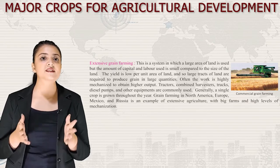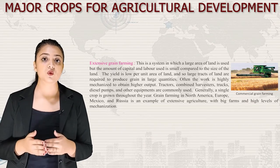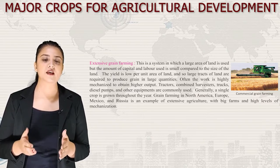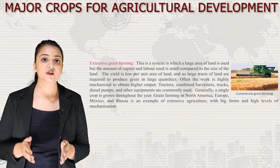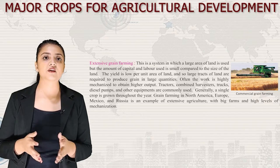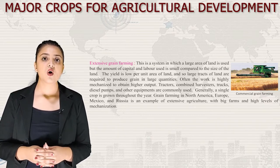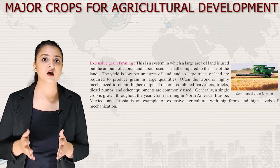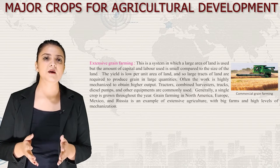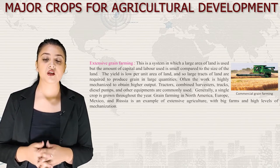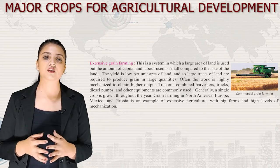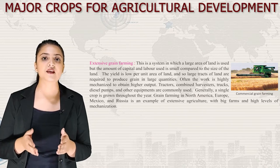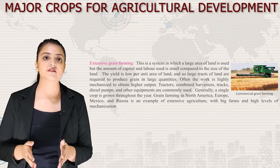First is extensive grain farming — a system where large areas of land are used but the amount of capital and labor is small compared to the size of the land. The yield is low per unit area, so large tracts are required to produce grain in large quantities. The work is highly mechanized using tractors, combined harvesters, trucks and diesel pumps. Grain farming in North America, Europe, Mexico and Russia are examples, with big farms and high levels of mechanization.